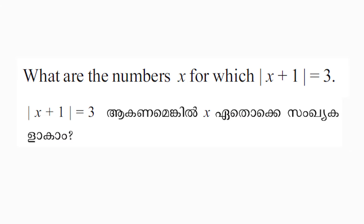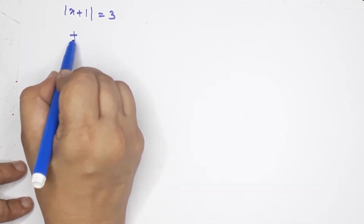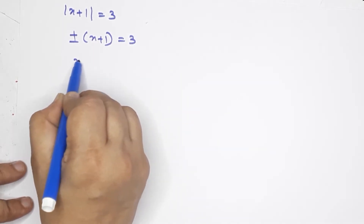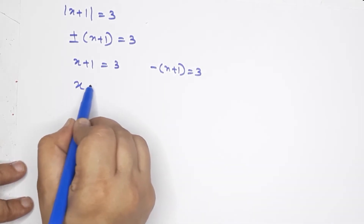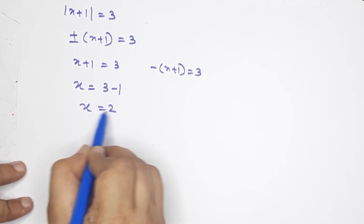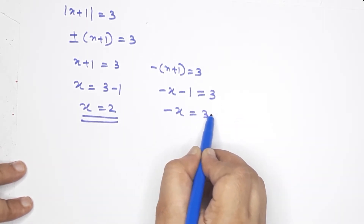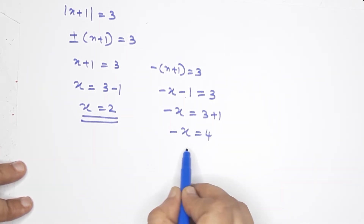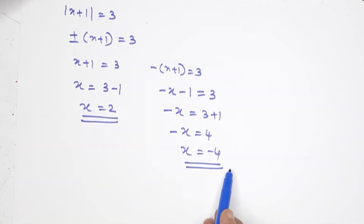Let's do this again. What are the numbers x for which modulus of x plus 1 equals 3? Modulus of x plus 1 equals 3. Using plus or minus: x plus 1 equals 3 gives x equals 2. And minus x plus 1 equals 3 gives minus x equals 4, so x equals negative 4. We have two values. Check: modulus of negative 4 plus 1 equals modulus of negative 3 equals 3. And 2 plus 1 equals 3.